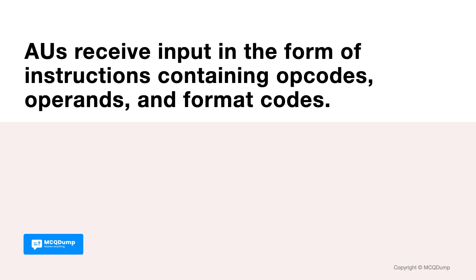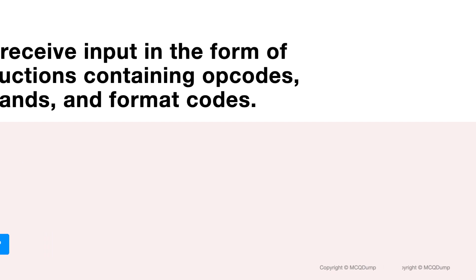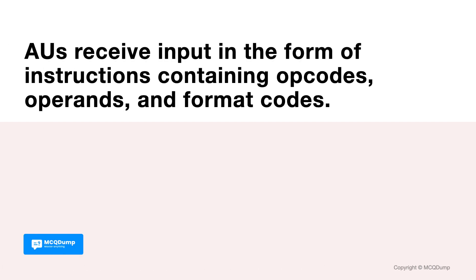AUs receive input in the form of instructions containing opcodes, operands, and format codes. True or false? It is true. AUs receive input in the form of instructions containing opcodes, operands, and format codes.